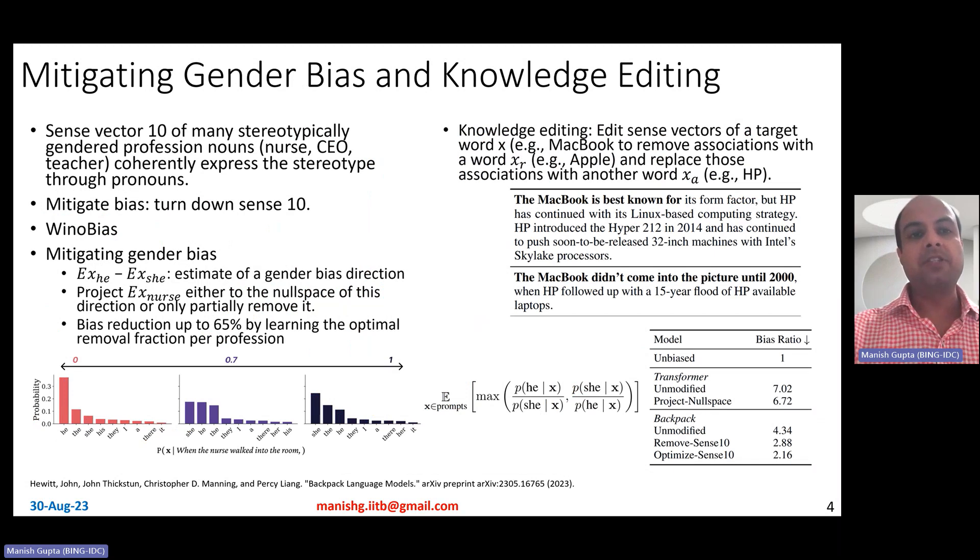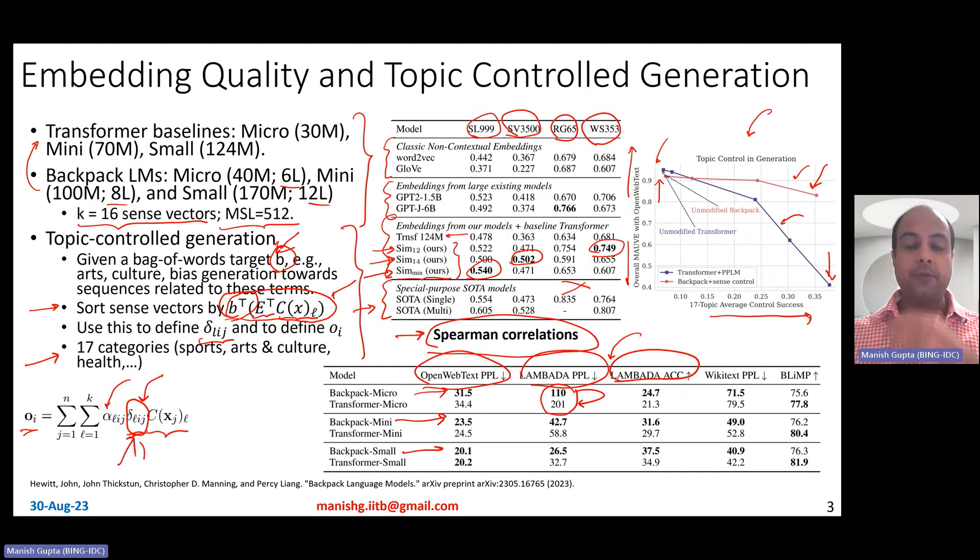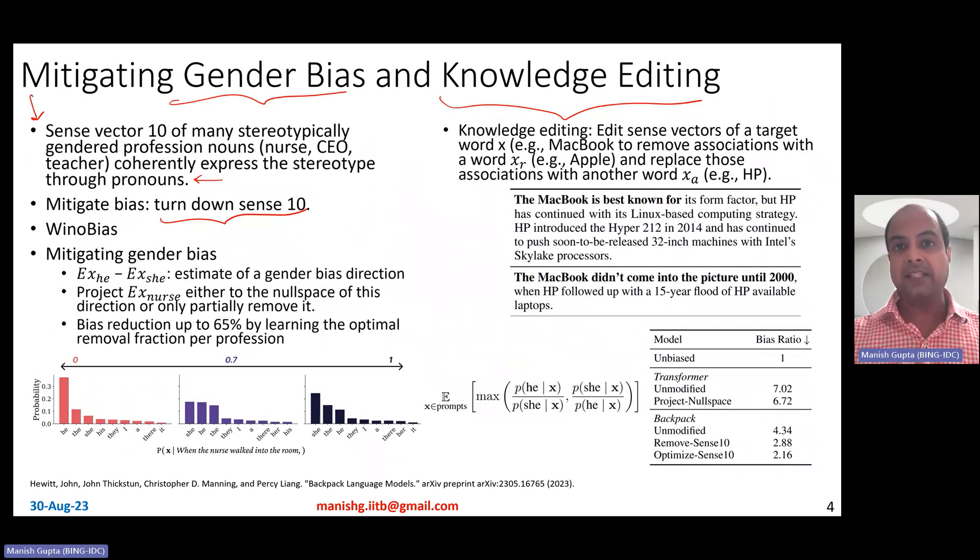The second application with the used backpack models is to mitigate gender bias. And the third application is knowledge editing. So they observed that in their model, sense number 10 actually associates with bias. So that actually associates a whole bunch of these gendered profession nouns with the stereotypical pronouns. For example, it relates nurse with her and CEO with him. So to mitigate the bias, the idea is to turn down sense 10 while doing the computations in the backpack element. Now that you have a control on which sense really denotes bias, just turn down that sense. So you can turn it off by actually multiplying the computation OI with a score between zero to one, where if you basically keep it as one, then you're not turning it down, but a number less than one will turn down sense number 10 completely.